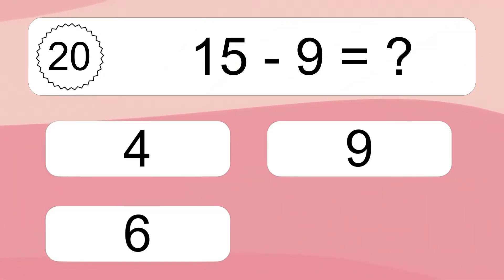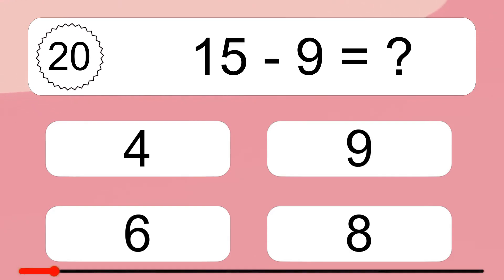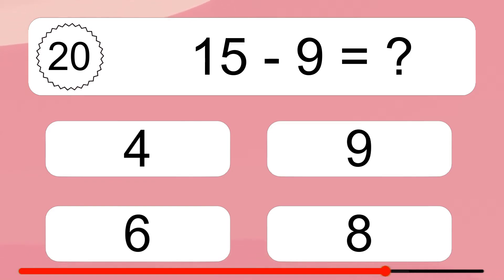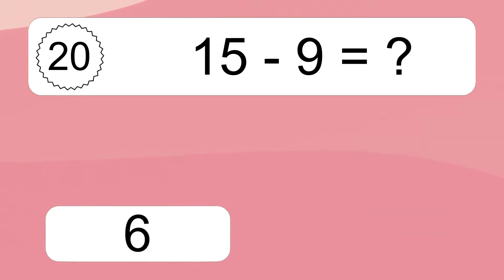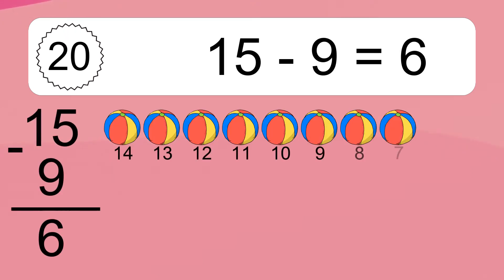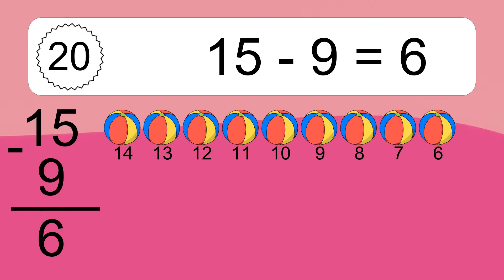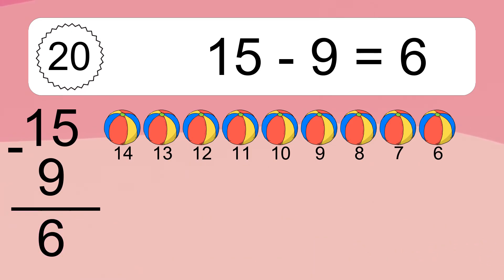15 minus 9 equals what? 15 minus 9 equals 6. Let's count it: 14, 13, 12, 11, 10, 9, 8, 7, 6.